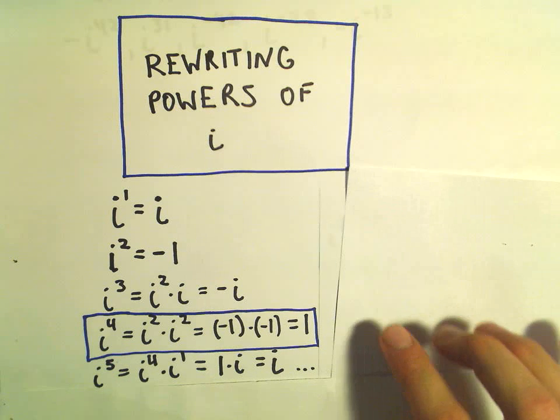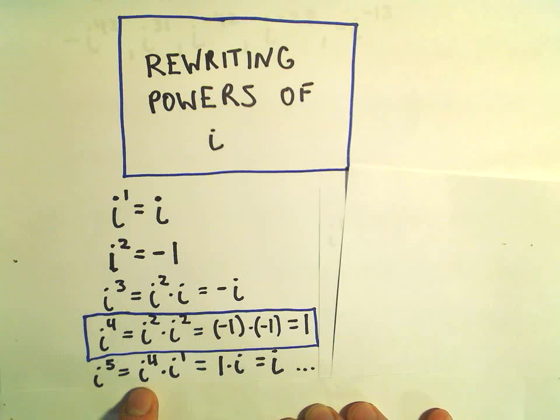And likewise, notice if you do i to the fifth, that's i to the fourth times i to the first, which is 1 times i, you get i. So we just simplify, hey, we're back where we started.